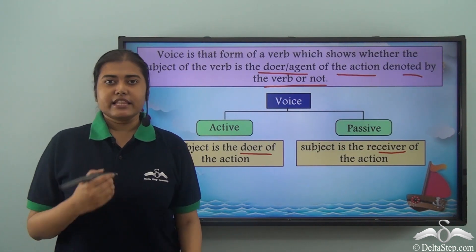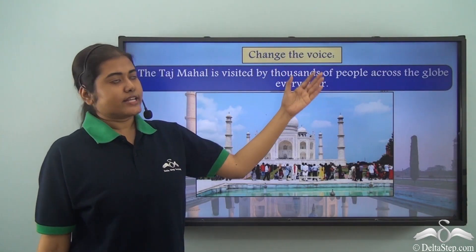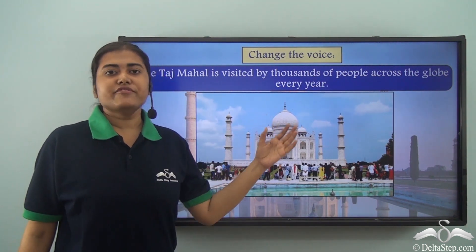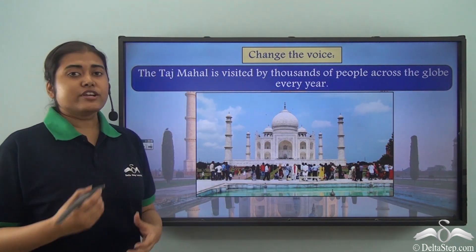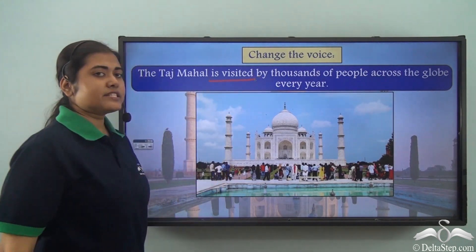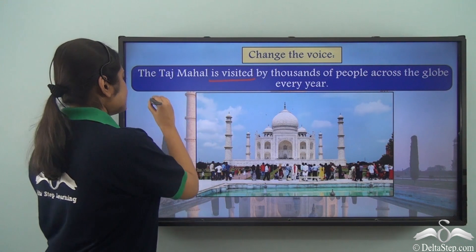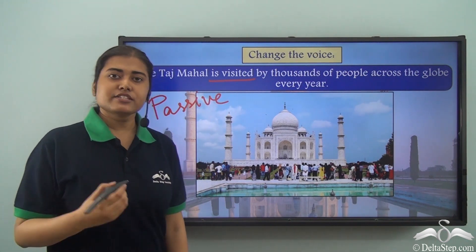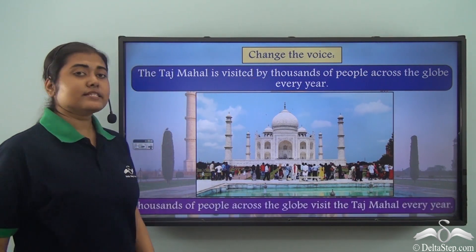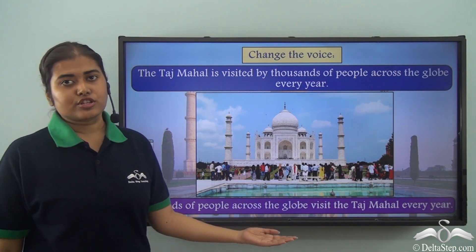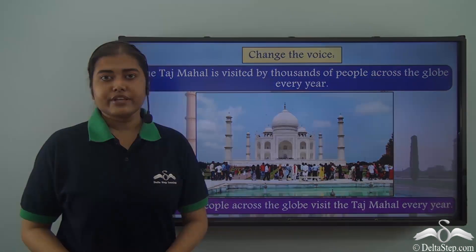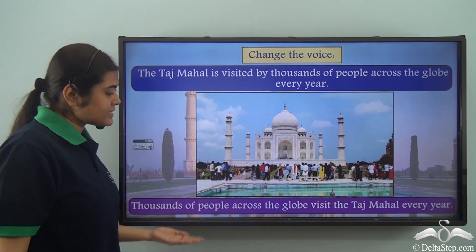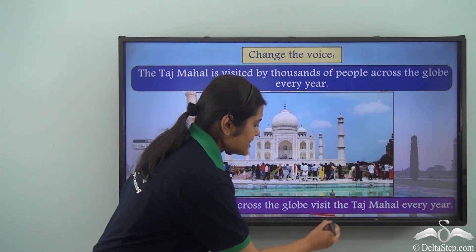Change the voice: 'The Taj Mahal is visited by thousands of people across the globe every year.' Now which voice is it? The verb is 'is visited' and this form of the verb tells us that this sentence is in the passive voice, so we have to change it to active voice. In active voice the sentence will be: 'Thousands of people across the globe visit the Taj Mahal every year.' Here the doer comes in the subject position, then we have the verb 'visit', then the object 'the Taj Mahal'.